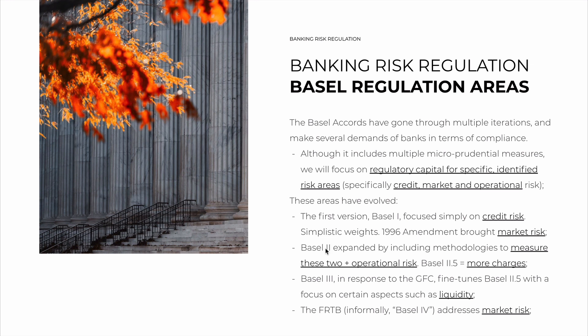Basel II expanded on Basel I, including methodologies to measure these two risks and inserting operational risk. It also brought a three-pillar framework, which included two other pillars besides regulatory capital — about bank supervision and disclosure to investors.